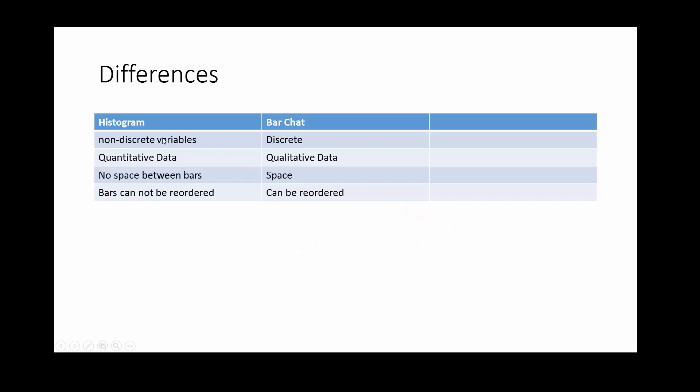For histogram, it's non-discrete variable. Bar chart is for discrete variable or categorical variable. Histogram is quantitative data. Bar chart is qualitative data.